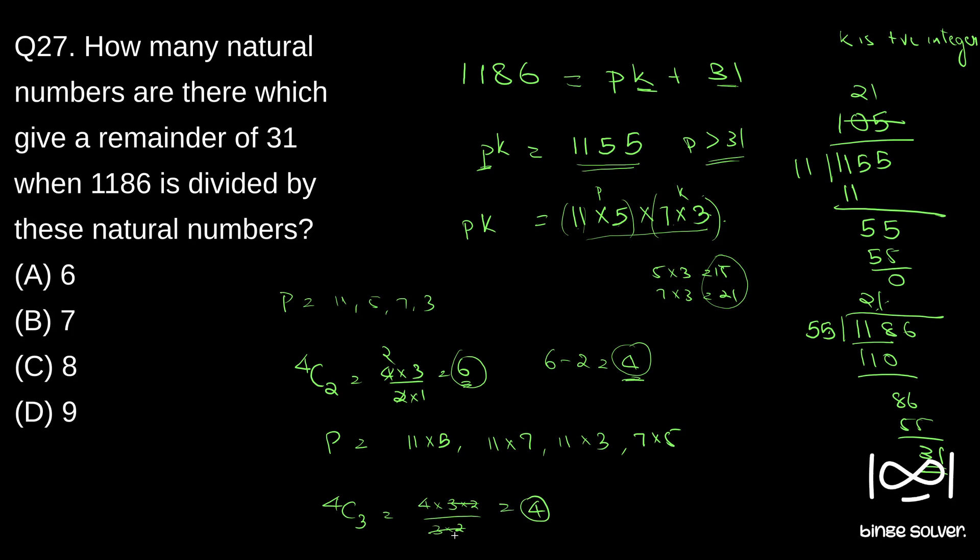3 out, which are the 11 into 5 into 7, 11 into 5 into 7, 11 into 5 into 3 and 5 into 7 into 3 and 5 into 7 into 3. These are the four cases that we can pick from 4C3, these are the four cases. So we get four.